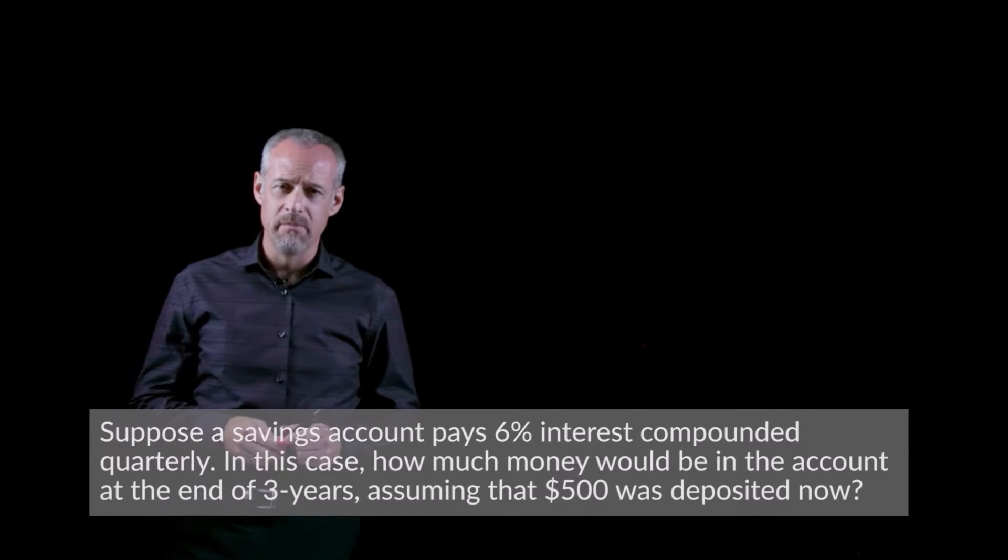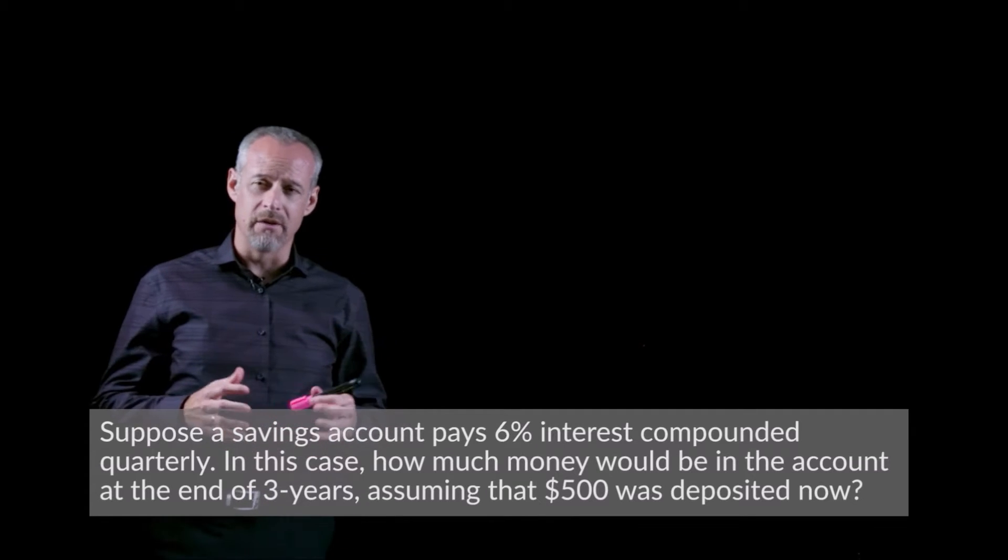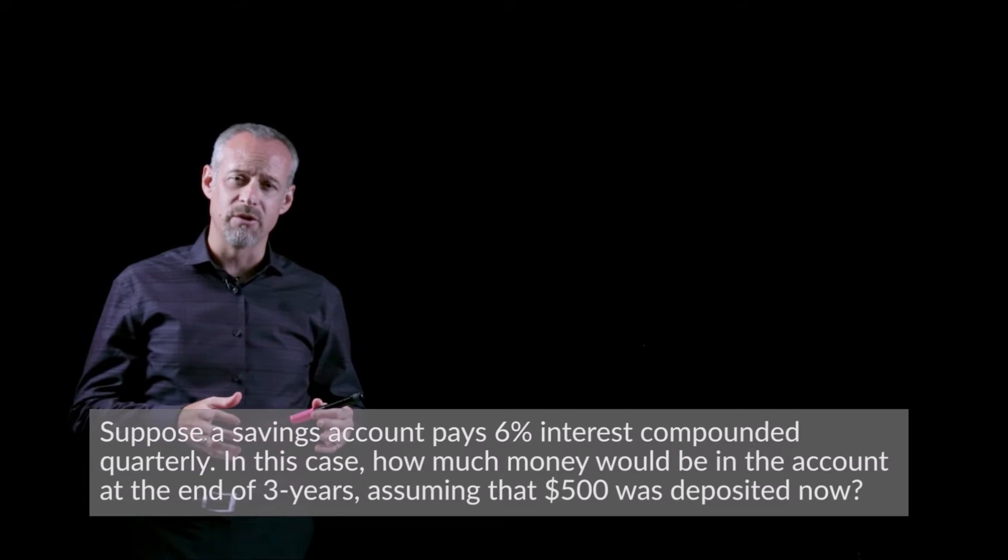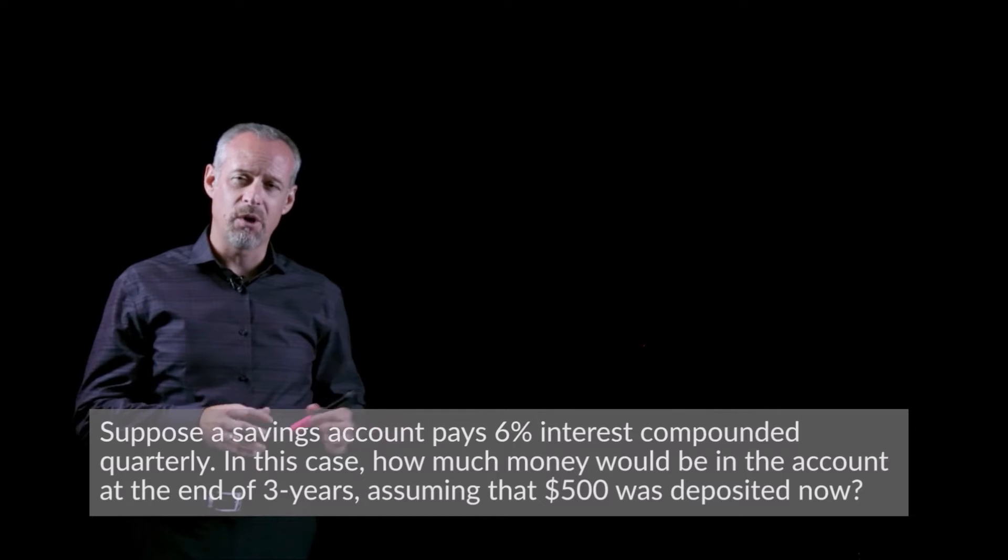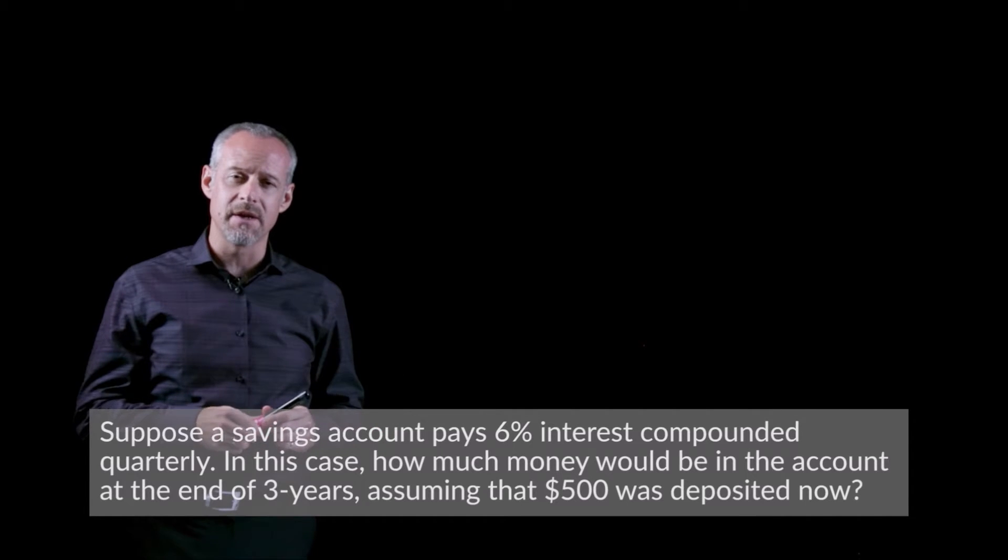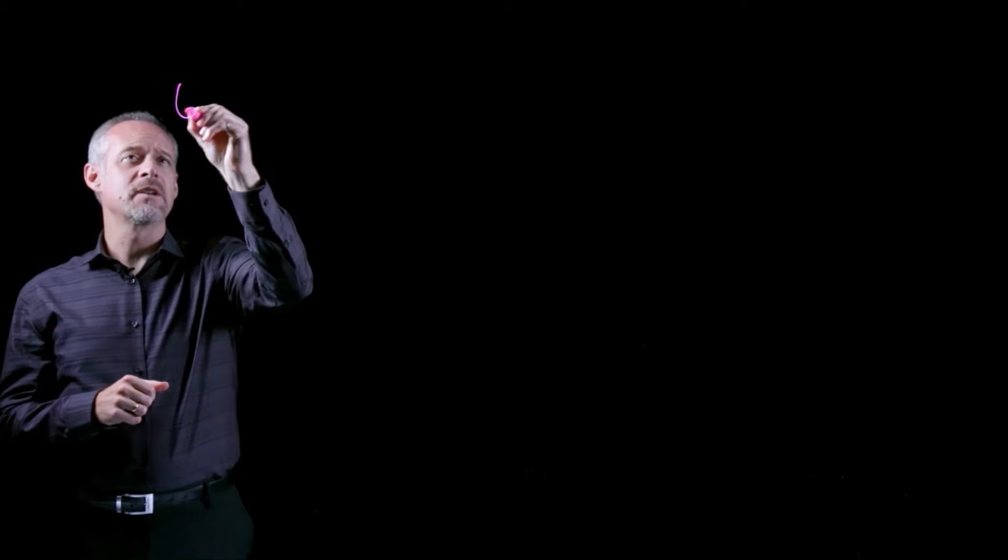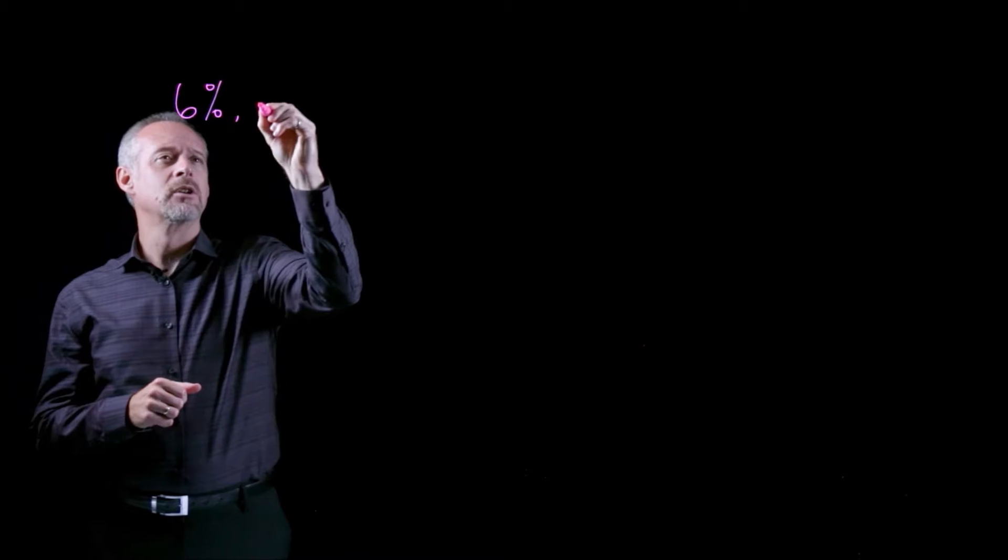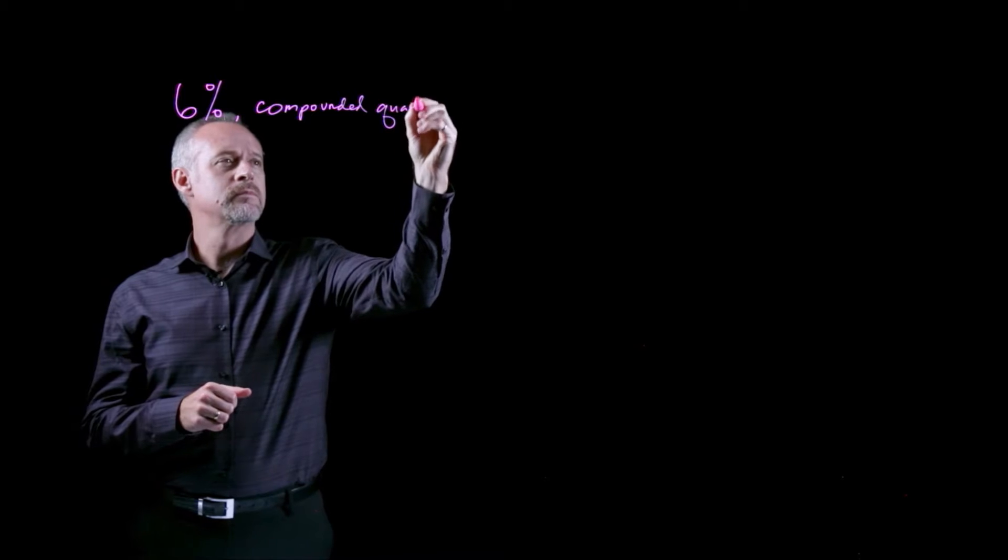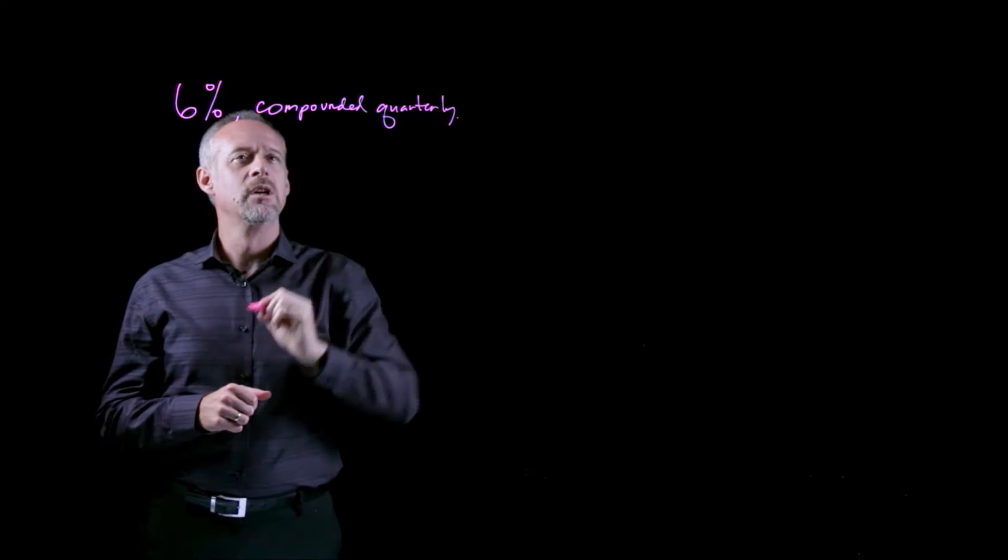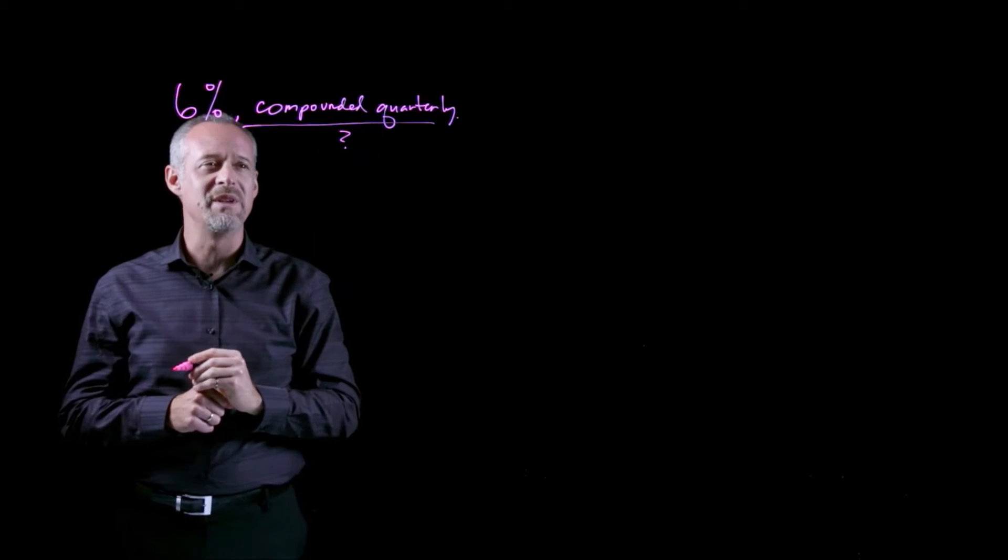Okay, so as you can see in this problem, it's more or less the same problem we saw last time with an investment of $500 and interest earned at 6%. However, if you read the problem carefully, you'll notice that it says something a little bit different after the 6%. It has the term 6% compounded quarterly. What does this mean?